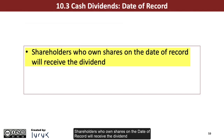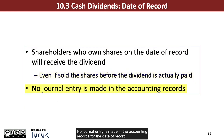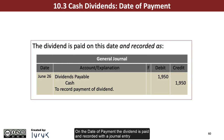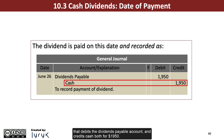Shareholders who own shares on the date of record will receive the dividend, even if they have sold the shares before the dividend is actually paid. No journal entry is made in the accounting records for the date of record. On the date of payment, the dividend is paid and recorded with a journal entry that debits the dividends payable account and credits cash, both for $1,950.